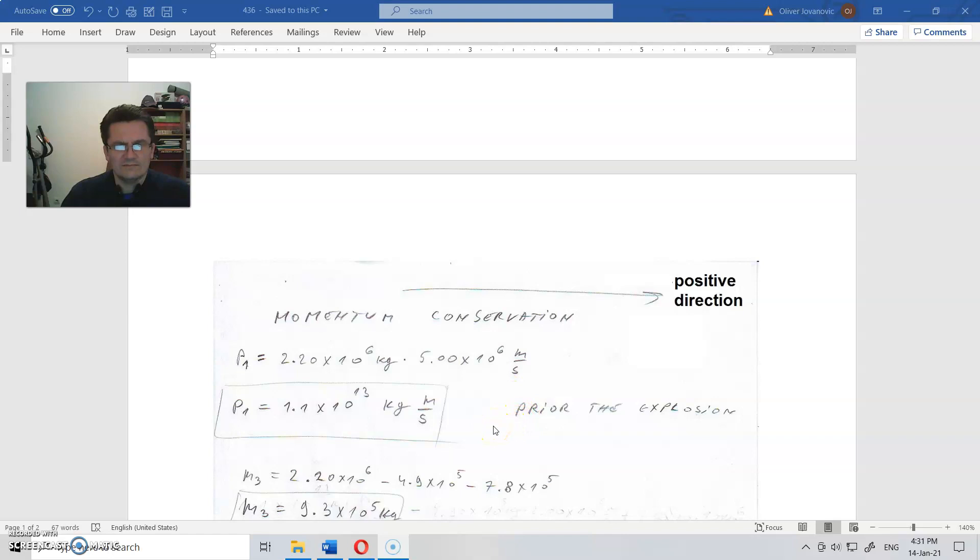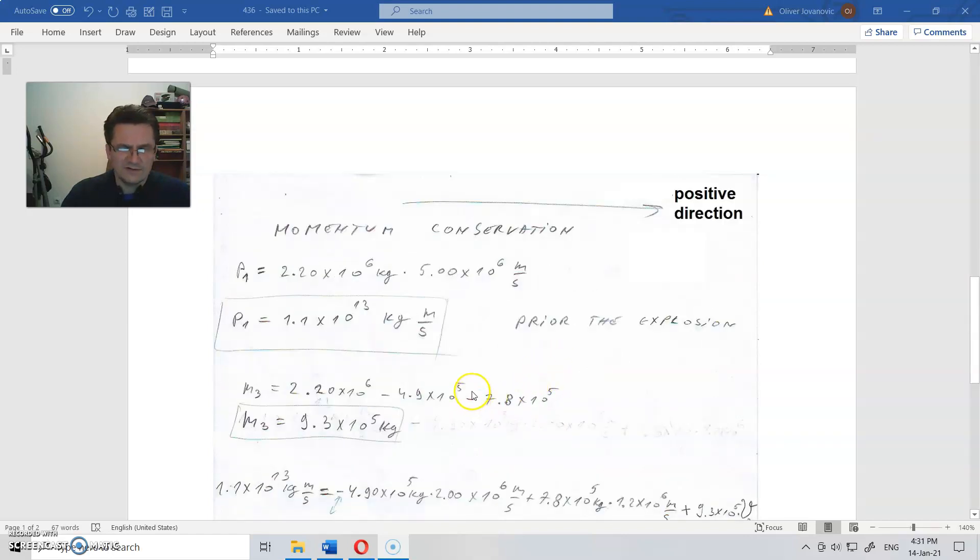And that is 1.1 times 10 to the 30 kilograms meters per second, and that is the momentum prior to the explosion. Let us first find the mass of the third piece, that is very important.